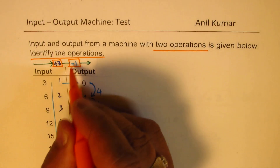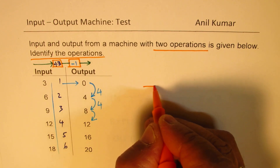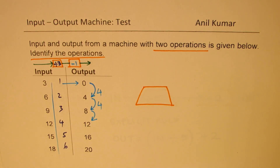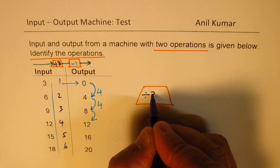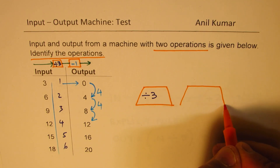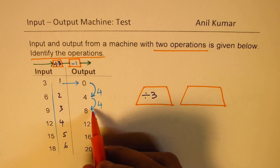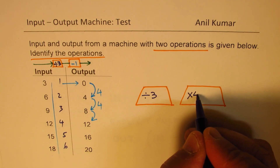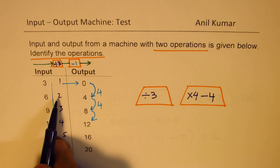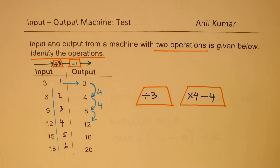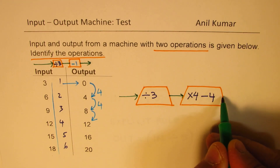The operation here is slightly more complicated since the output increases by 4, not 1 as in the last case. So the first operation is to divide by 3. Then I multiply that result by 4 and take away 4. For example: 1 × 4 − 4 = 0, 2 × 4 − 4 = 4, 3 × 4 − 4 = 8. It works!